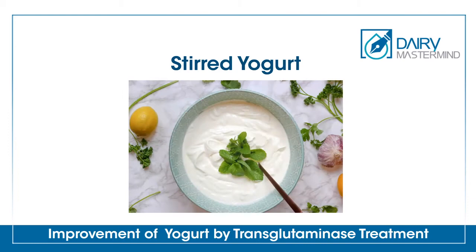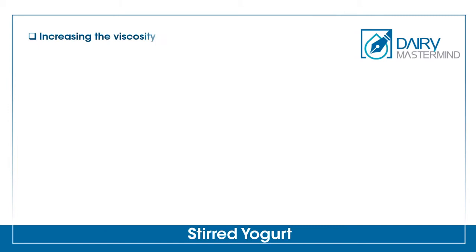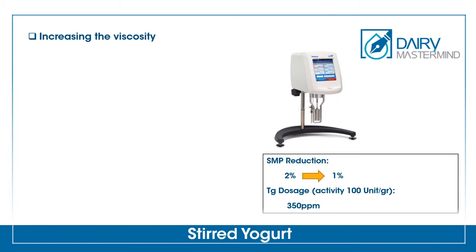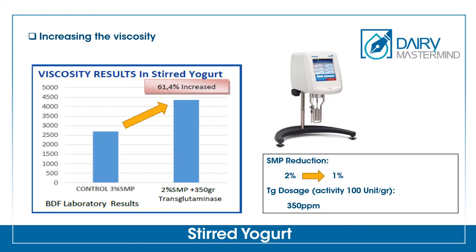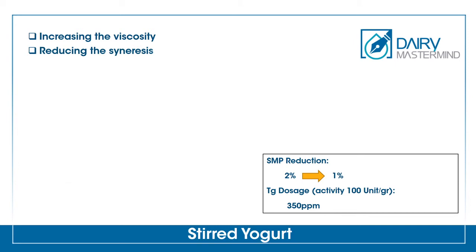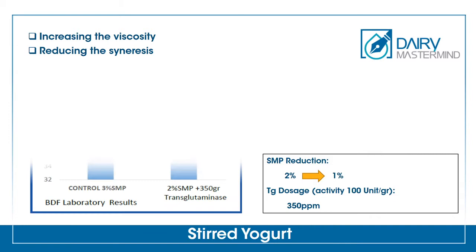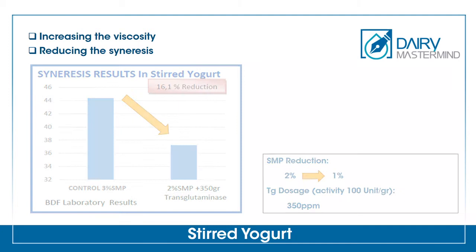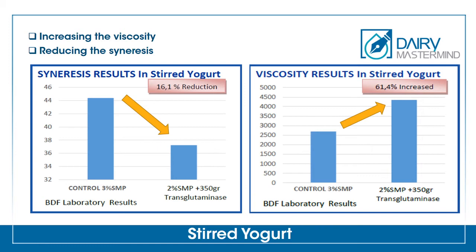Stirred yogurt: TG can increase the viscosity in stirred yogurt. By reducing 1% of SMP and replacing it with 350 ppm of TG enzyme with an activity of 100 units per gram, the viscosity will increase by 61.4%. Moreover, with this replacement, the syneresis will be reduced by 16.1%. Therefore, by increasing the viscosity and reducing the syneresis, the use of TG enzyme to improve the properties of stirred yogurt is definitely justified.